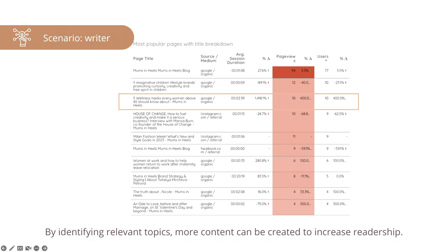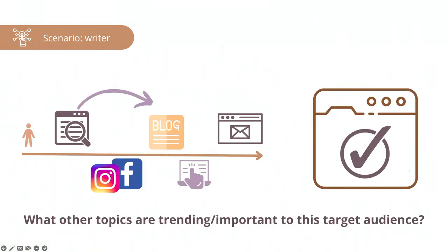We also noticed that some topics resonate more than others — people find those on Google. This could indicate that the writer should focus more on those topics in the future. When I showed her this data she said 'oh, they're interested in that!' — it was quite eye-opening. Looking at the data can be interesting, and it raises the question: which other topics are trending and important for this specific audience?